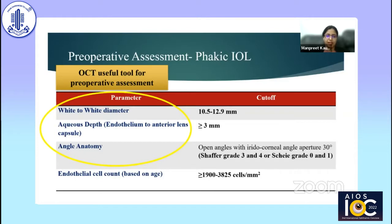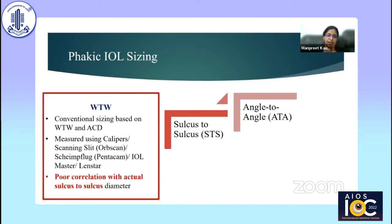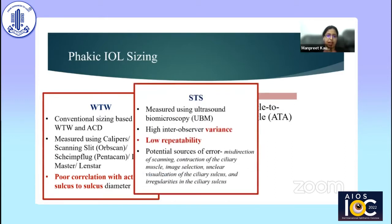OCT is a useful tool for pre-operative sizing assessment. Conventionally, white-to-white has been used to determine which size of phacic IOL to implant, but we are moving toward sulcus-to-sulcus diameter and angle-to-angle. White-to-white has poor correlation with the actual sulcus-to-sulcus diameter, resulting in oversizing and undersizing in quite a few cases. Sulcus-to-sulcus diameter shows high inter-observer variance, requires a skilled operator using high-frequency ultrasound biomicroscopy, and has low repeatability.